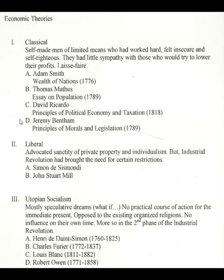John Stuart Mill didn't really reject private property, capitalism, or free enterprise, but believed that there should be some restrictions in order to protect the poor. He believed, for example, that there should be some public utilities — that those businesses that are natural monopolies, like railroads, waterworks, or gas companies, should be owned by the state. He also believed in free, compulsory education for all, that child labor should be regulated, and in income and inheritance taxes as economic equalizers.